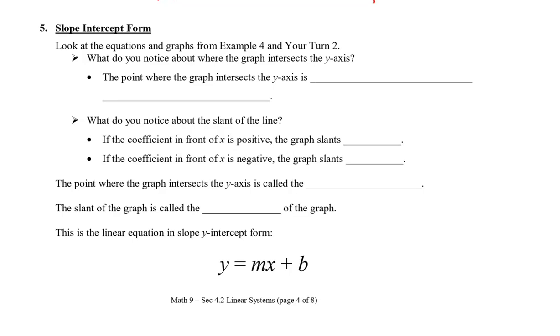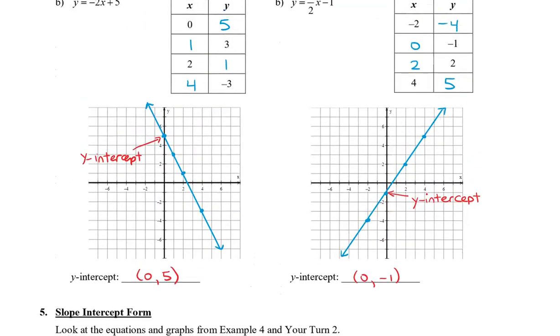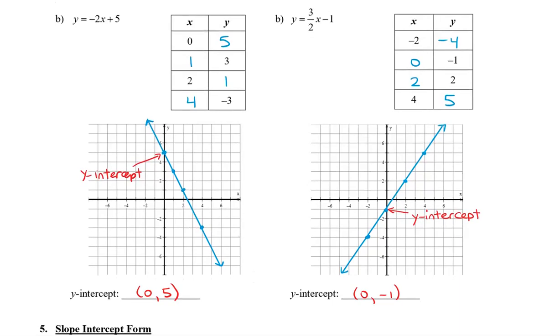Now I'm going to take a look back at your turn two, which hopefully you did. So here's the question, and what I want you to notice is what is the relationship between the y-intercept and the equation? If you take a look at the y-intercept, you'll notice that it's (0, 5).